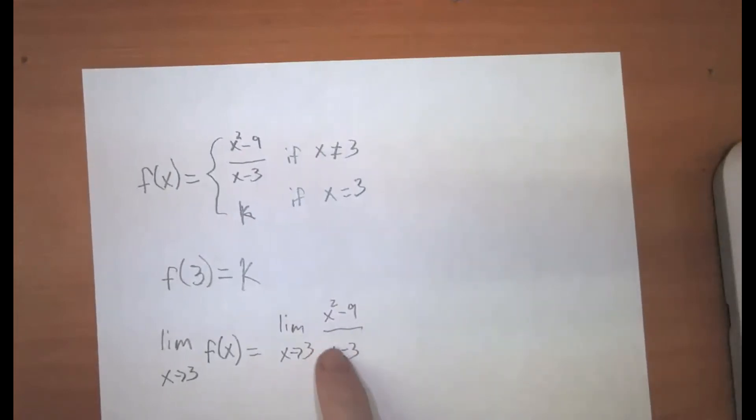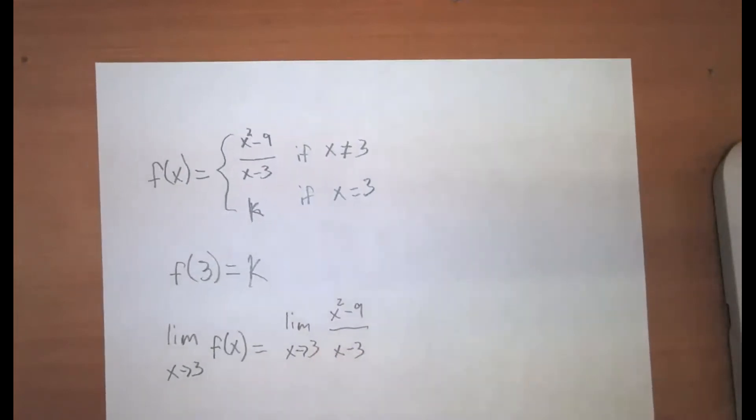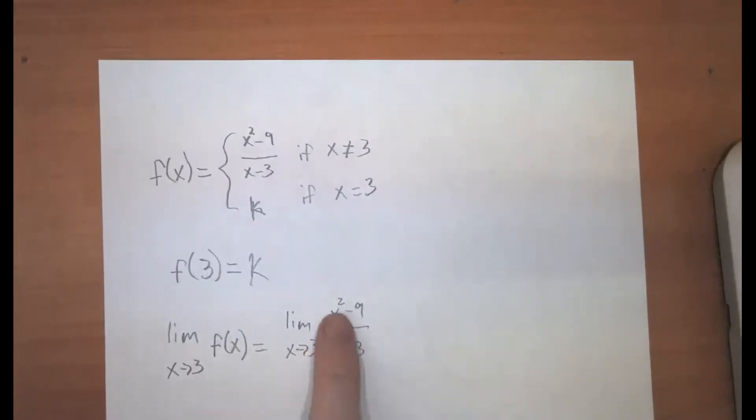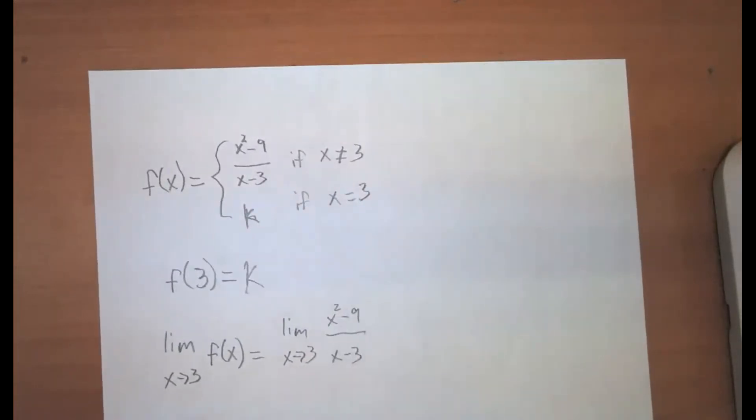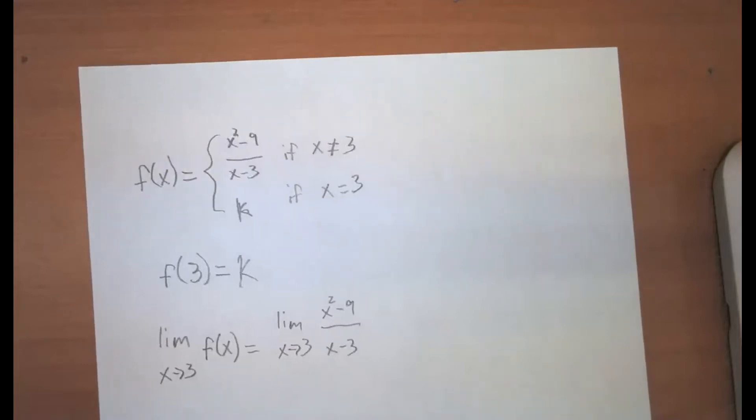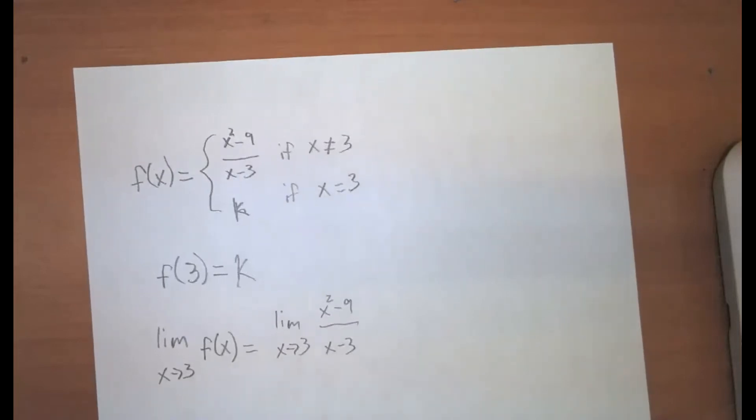So we need to figure out if this limit exists. How do you think we can do that? Because if, like we saw before, if we plug 3 in for x, we're going to get 0 over 0. So that's not going to help us to calculate that limit.